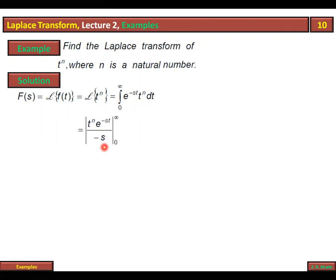Integration by parts میں first function جو ہم نے t^n رکھا، وہ as it is آتا ہے اور second function کی integration کرتے ہیں۔ Second function ہے e^(-st)۔ e^(-st) کی integration کیا ہوگی؟ e^(-st) کو minus st کے derivative سے divide کرتے ہیں۔ minus st کا derivative with respect to t آئے گا minus s، تو e^(-st) divided by minus s۔